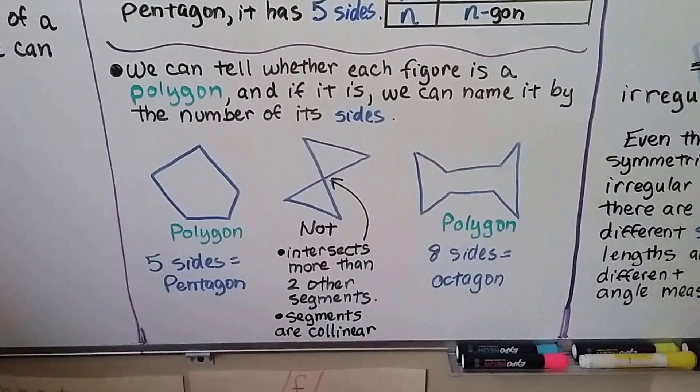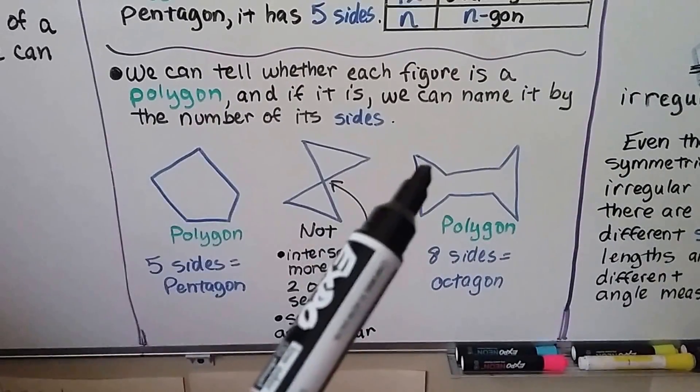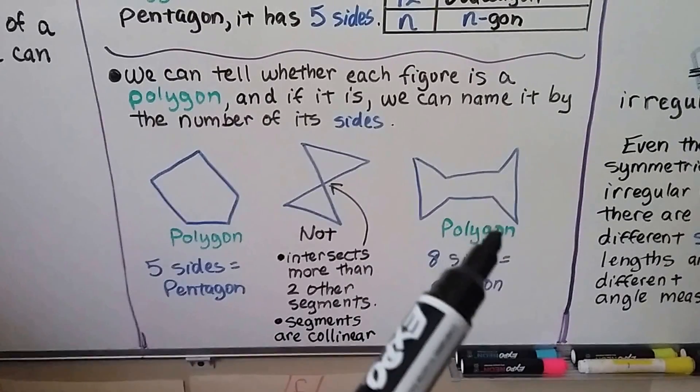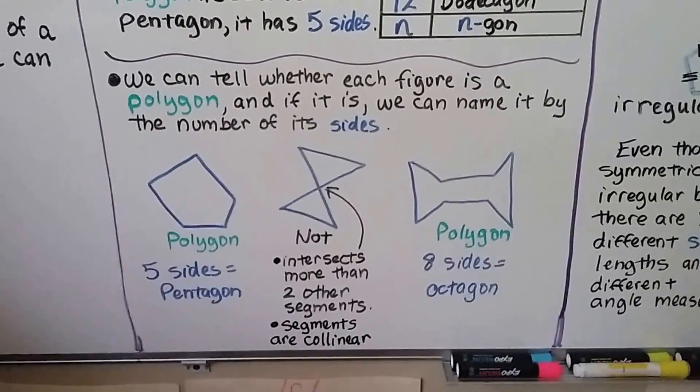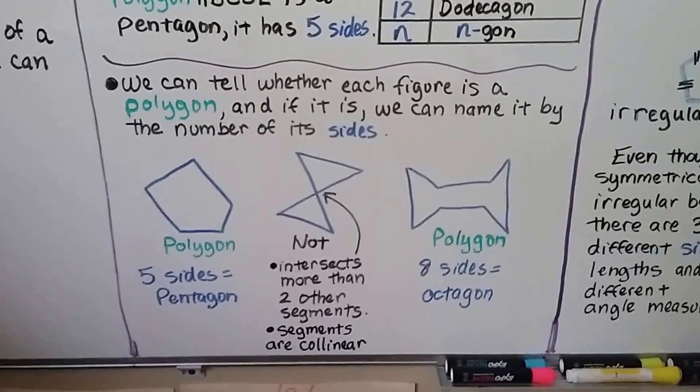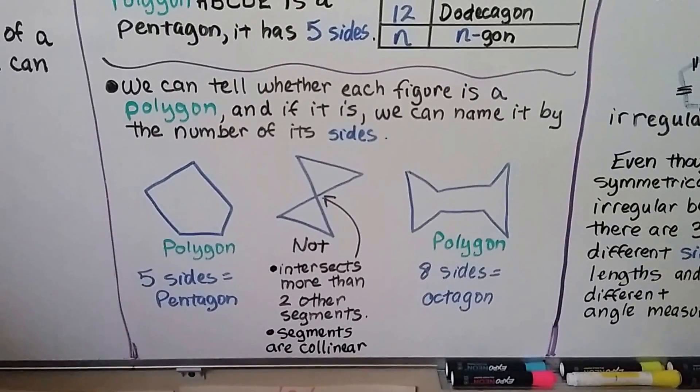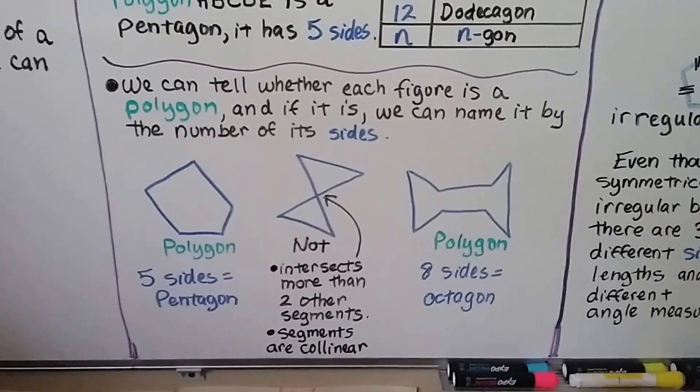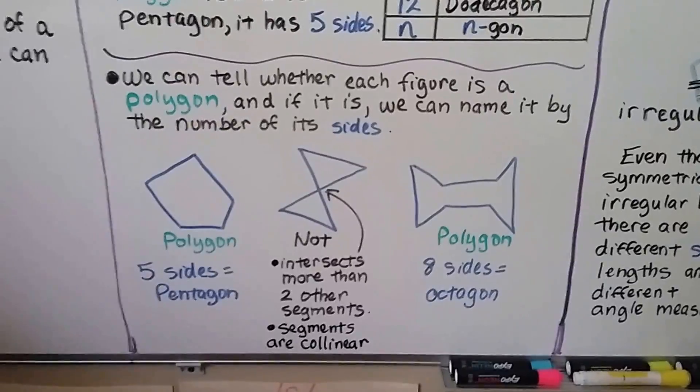This is a polygon. It's got eight sides: one, two, three, four, five, six, seven, eight. This is an octagon. It may not look like a normal octagon, what you're used to seeing, but any polygon with eight sides is considered an octagon.